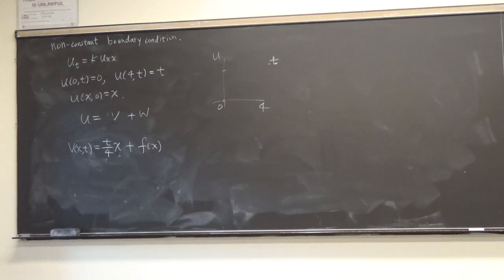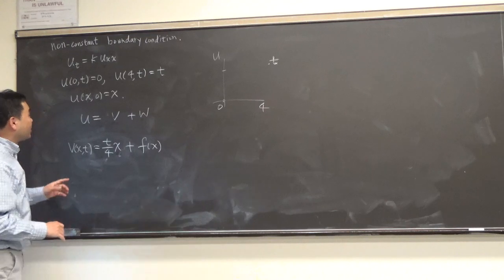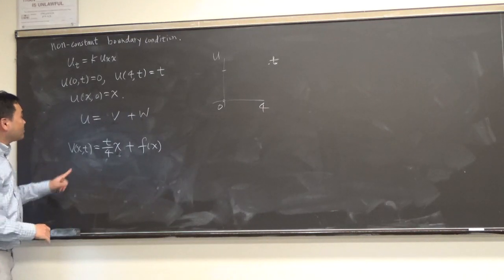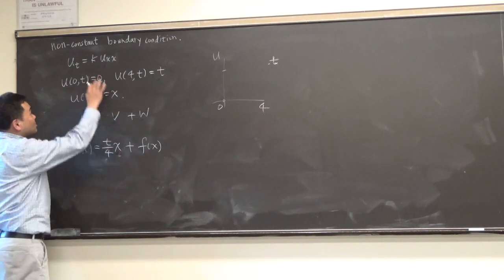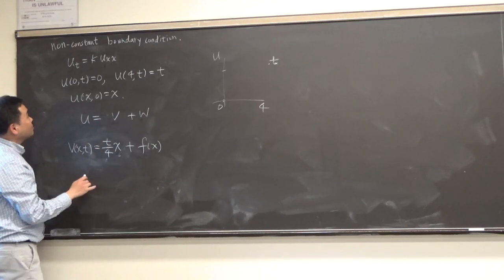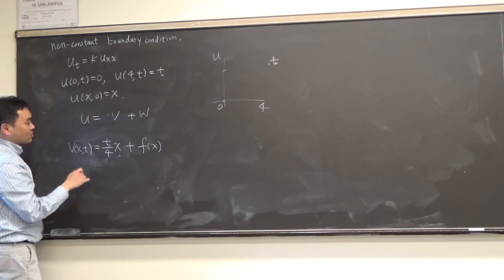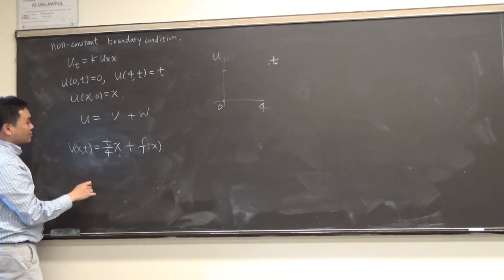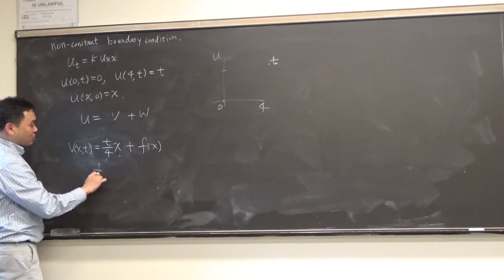Again, you're guessing. We're not really solving it yet. We're making guesses, right? Okay, so we have this. Let's now plug it into this side and see what happens. If you differentiate this by t, you get just one-fourth of x, right? Because we're doing partial derivative.